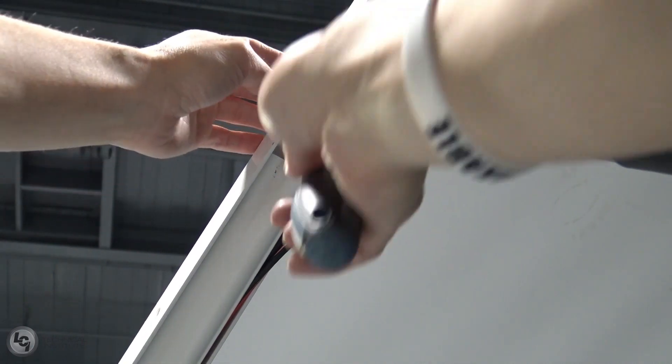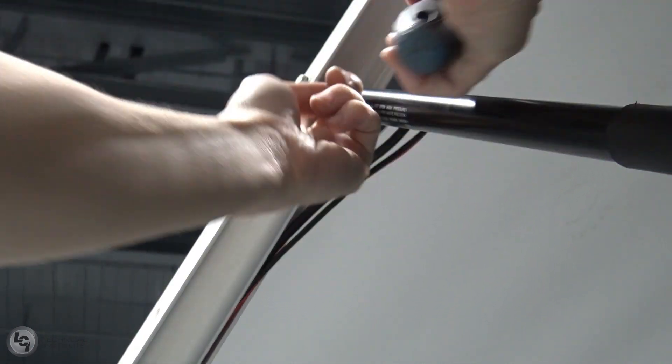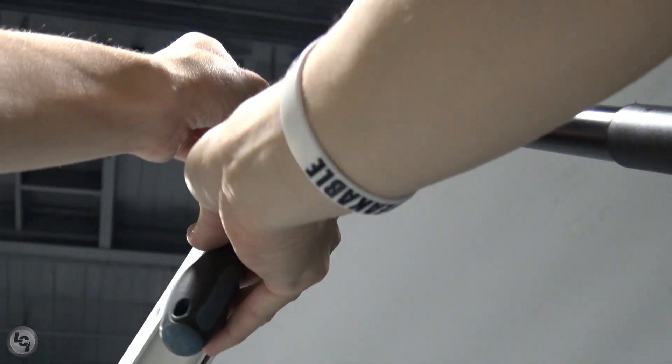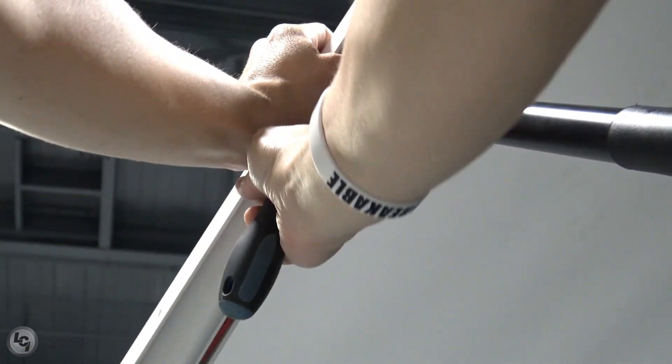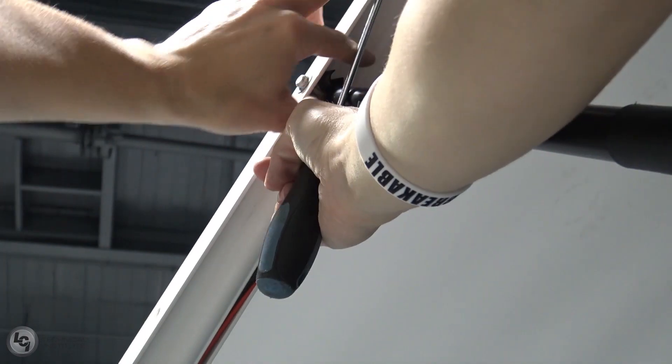If necessary, you can move wires or wire covers out of the way in order to more easily access these spacers. Also, be sure to hang on to all of these, as we'll be using them when we go to reassemble the awning after we have replaced the gas strut.